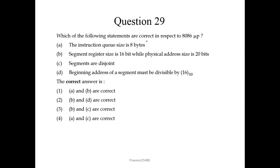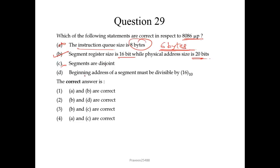Question number 29: which of the following statements are correct for the 8086 microprocessor? The instruction queue size is 6 bytes (not 8), because the maximum instruction size in 8086 is 6 bytes. The segment register size is 16-bit while physical address size is 20 bits — correct, as it has 16-bit data lines but 20-bit address lines. Segments are disjoint — not correct. The beginning address of a segment must be divisible by 16 — correct, due to segment addressing. So B and D are correct; the second option is correct.